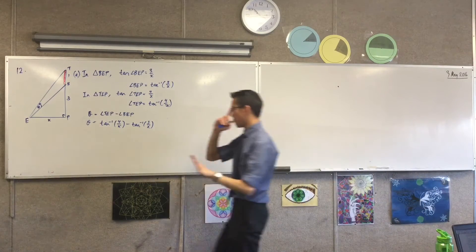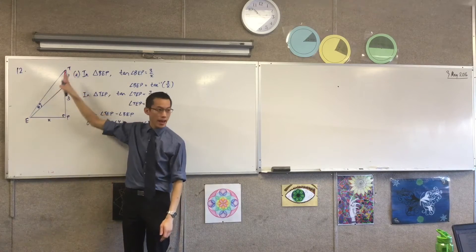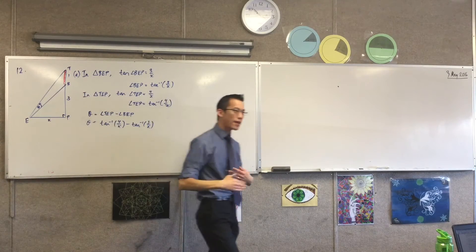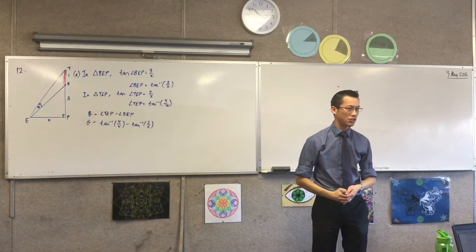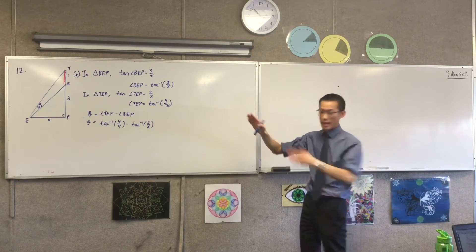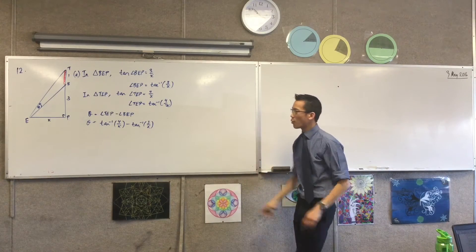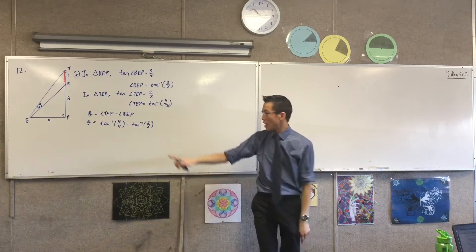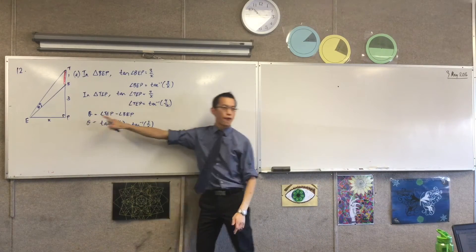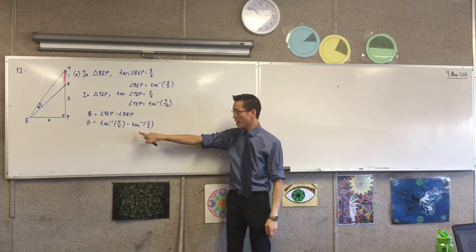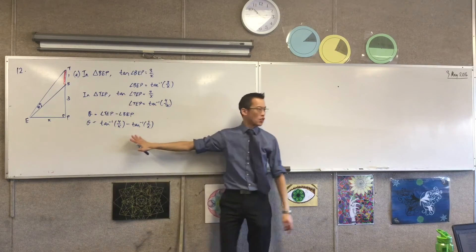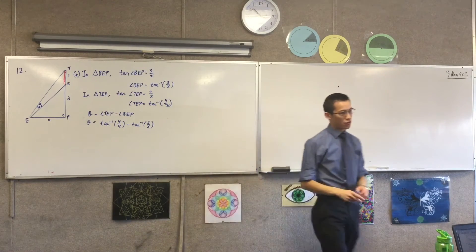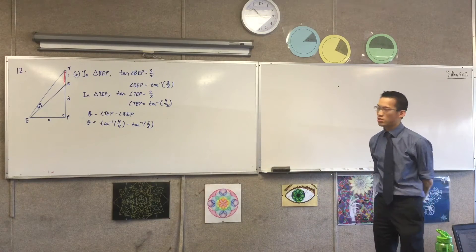X can get bigger or smaller. What they're trying to set up is that these two quantities are related. They want this as a function of this: what will my angle be based on how far away I am. That's all they're trying to set up.